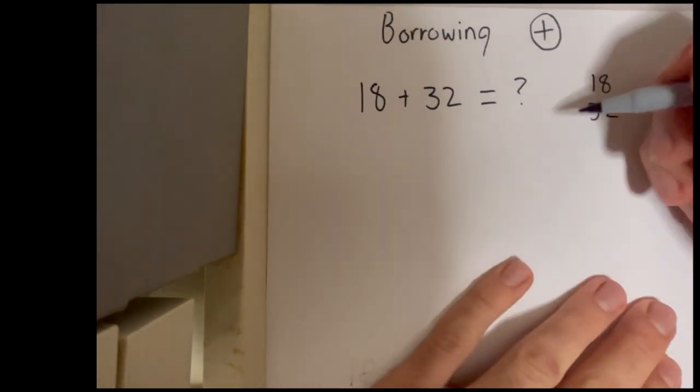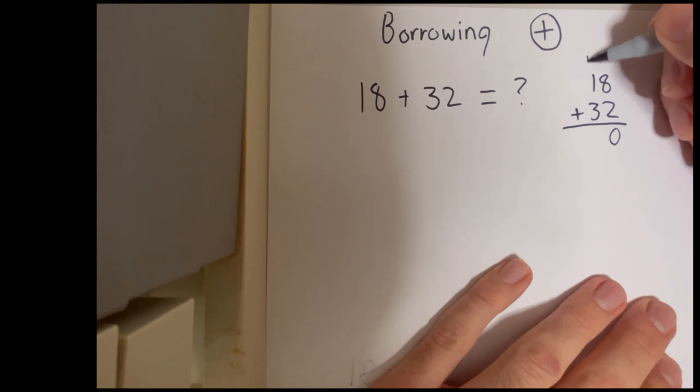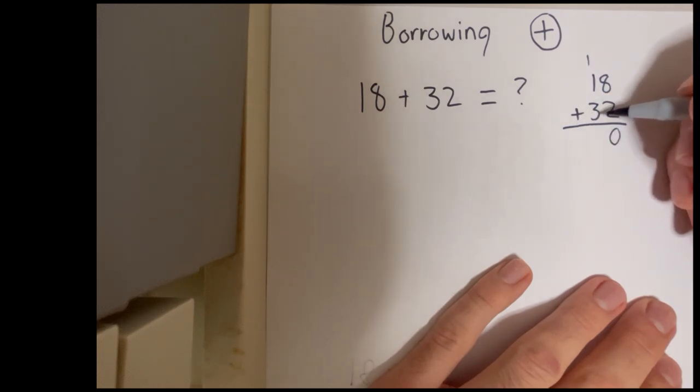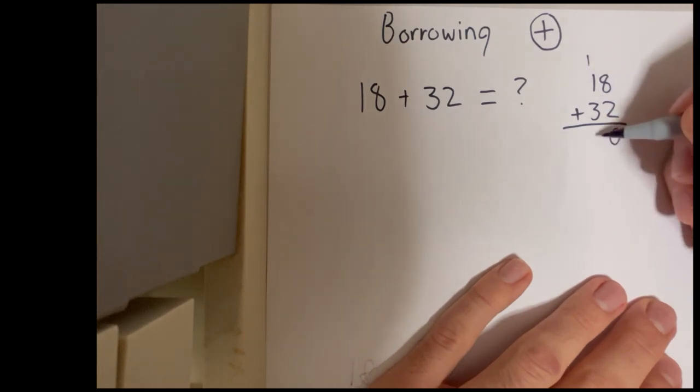Well we know if we do this, we can add the 2 here, that gives us 10, and we carry over the 1. And then when we have 30 plus 10 equals 40, plus the other 10 that we've carried over equals 50. So we do have our answer here, it's 50.